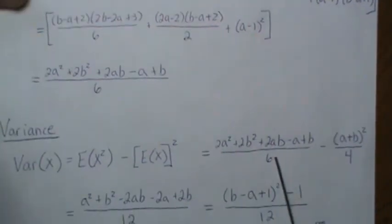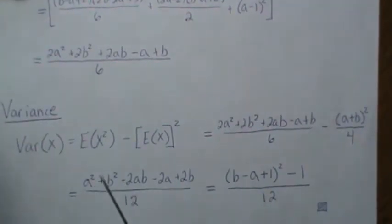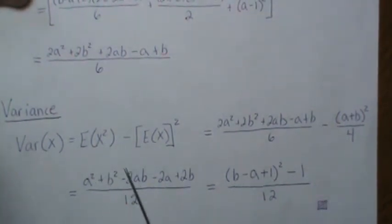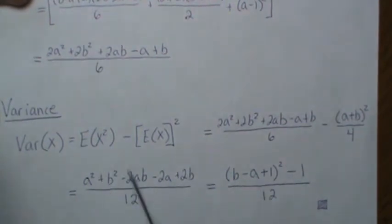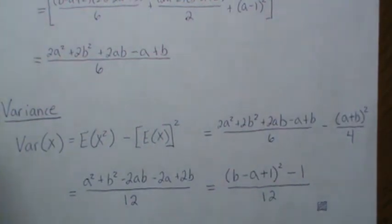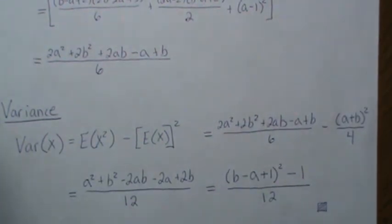Now we combine these fractions into this, and then if we add and subtract one here, then we can reduce this to this formula here, and that's the variance of a discrete uniform distribution from A to B.